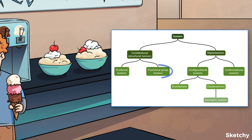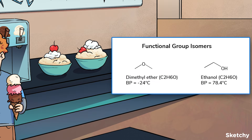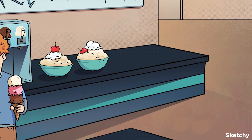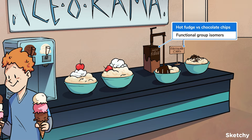There's also functional group isomers, another type of structural isomer. Functional group isomers have their atoms connected differently enough that they contain different functional groups, which usually leads them to have different chemical or physical properties. For example, ether and alcohol have the same molecular formulas, but ether has a much lower boiling point than alcohol. To represent functional group isomers, we've got another set of sundaes topped with chocolate chips and hot fudge — they've got the same ingredients but different physical properties, namely gooey versus crunchy.